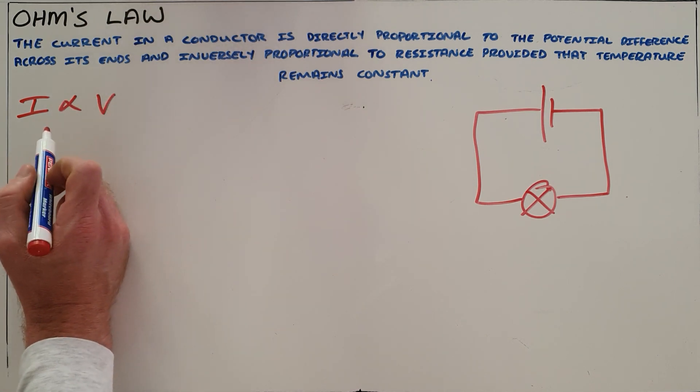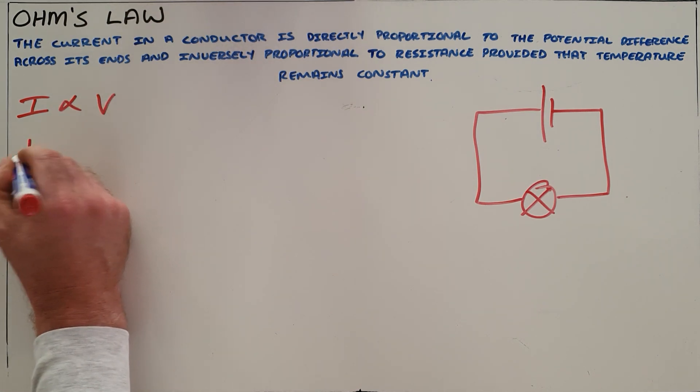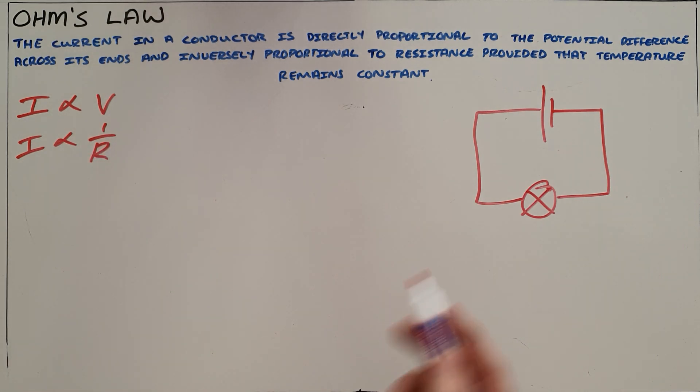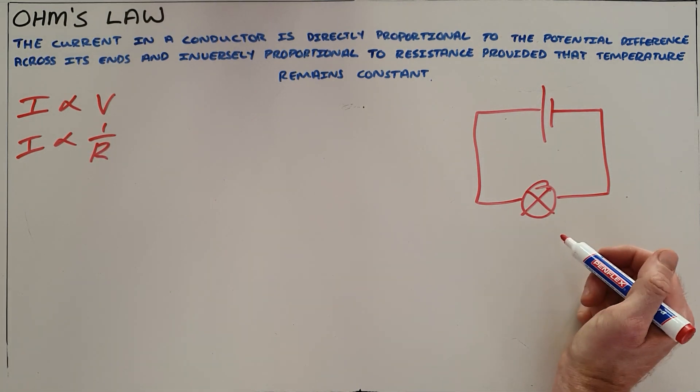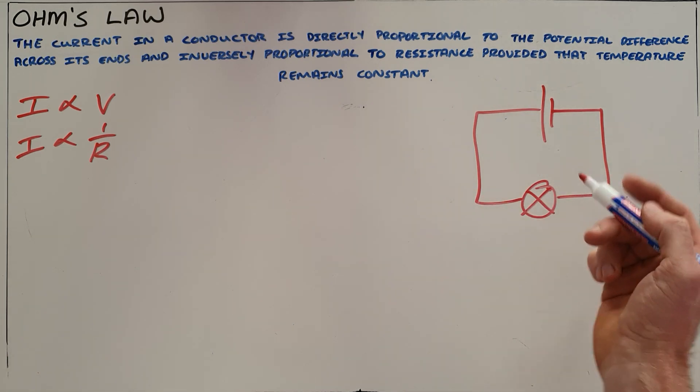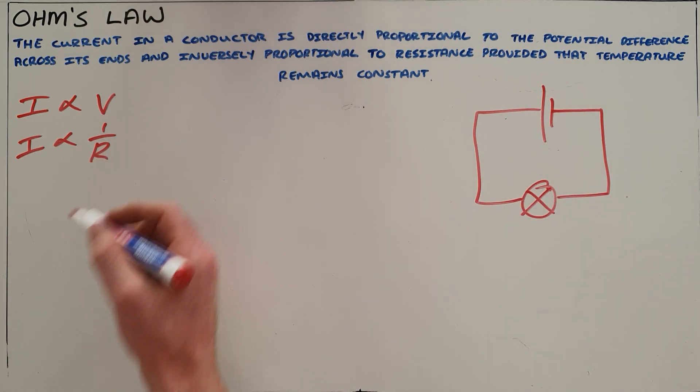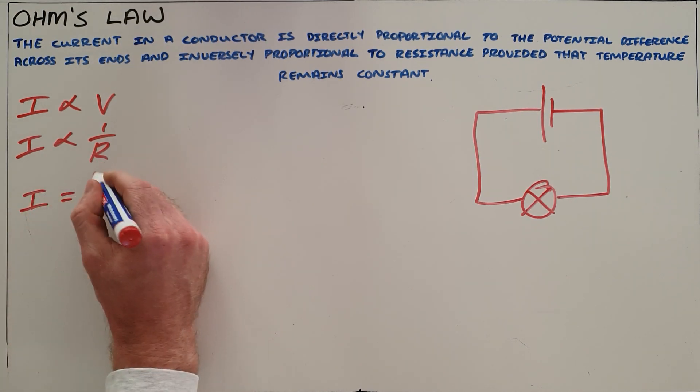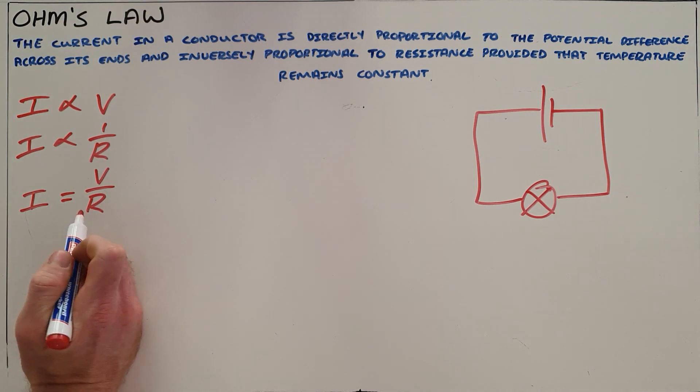The second part says the current is inversely proportional to the resistance, which also makes sense to us because we know that resistance is opposition to the flow of charge. So as soon as there is more opposition, the current is going to decrease. And from that we get our Ohm's law equation that says that I is equal to V over R.